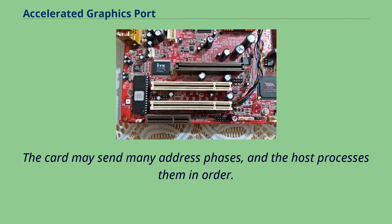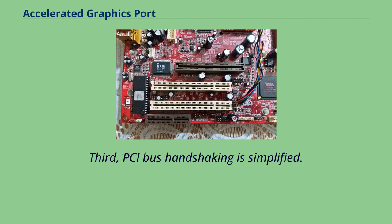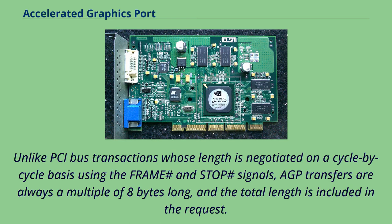The card may send many address phases, and the host processes them in order. This avoids long delays with the bus idle during read operations. Third, PCI bus handshaking is simplified. Unlike PCI bus transactions whose length is negotiated on a cycle-by-cycle basis using the FRAME# and STOP# signals, AGP transfers are always a multiple of 8 bytes long, and the total length is included in the request.